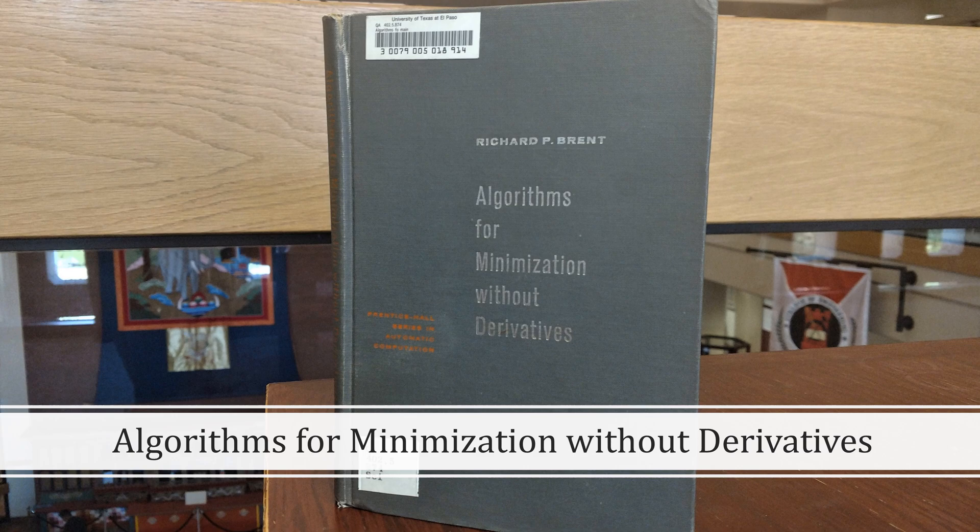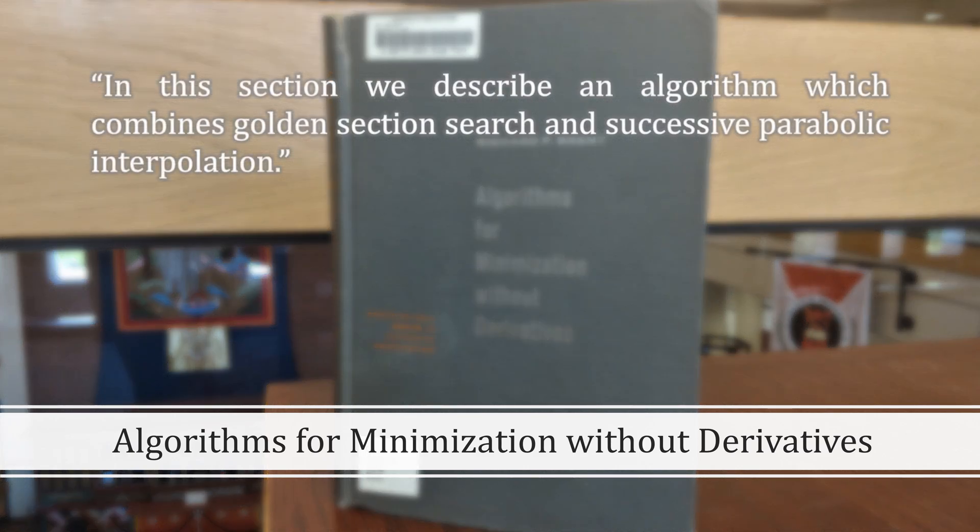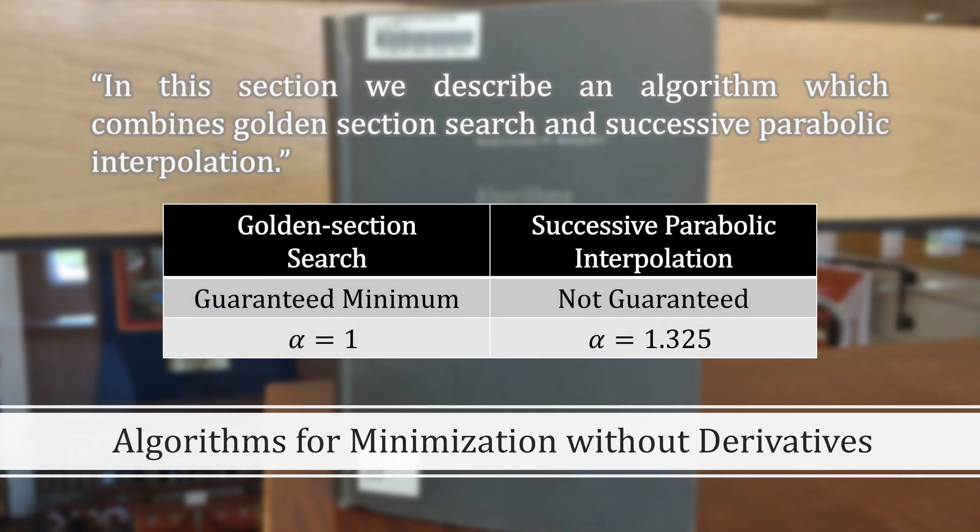Let's turn back again to algorithms for minimization without derivatives. In it, Brent writes, quote, in this section we describe an algorithm which combines golden section search and successive parabolic interpolation. Brent chose these two methods because golden section search is guaranteed to find a minimum and pretty efficiently even though it only has a linear order.